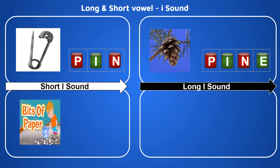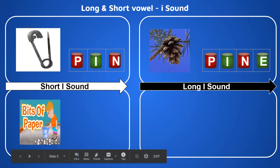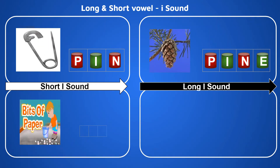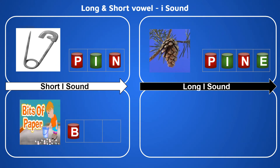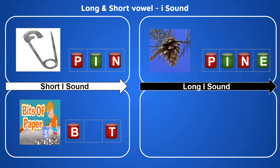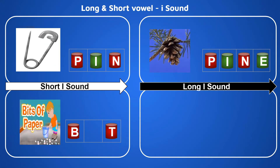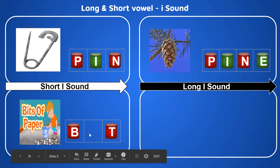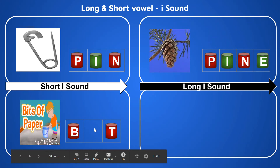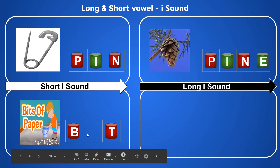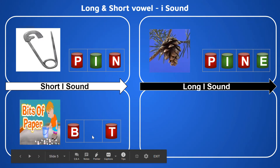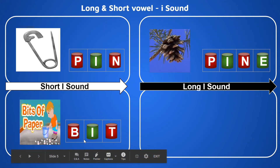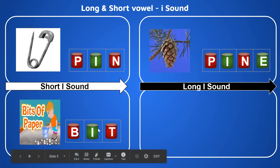Let's try another example. Look, there are lots of bits of paper. Let's take the word 'bit.' What is the beginning sound of 'bit'? B. What is the ending sound? T. What is the middle sound? It is E. B - E - T — 'bit.' Which alphabet makes the phonic sound E? That is alphabet I. So 'bit' has the short sound of alphabet I.